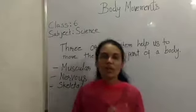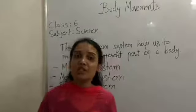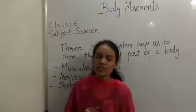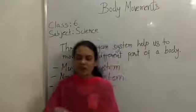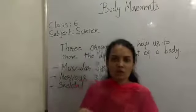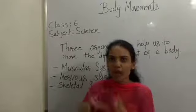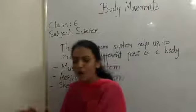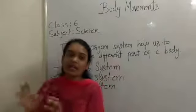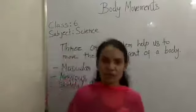First of all, we have to understand what is an organ system. Organ system means a number of different organs — a group of organs when they are working together and performing a specific function. This is known as the organ system.